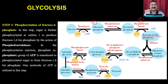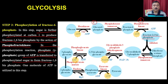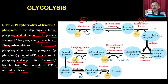In step number 3, the sugar is further phosphorylated at carbon number 1 to produce fructose-1,6-bisphosphate by the enzyme phosphofructokinase. The gamma phosphate group of ATP is transferred to the phosphorylated sugar to form fructose-1,6-bisphosphate. One molecule of ATP is utilized in this step. Remember that we have utilized one ATP in step number 1 and one ATP in reaction number 3.